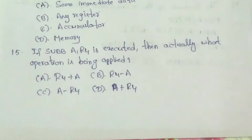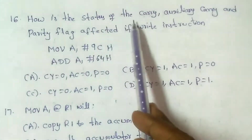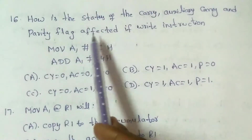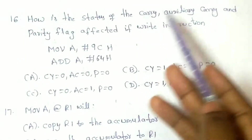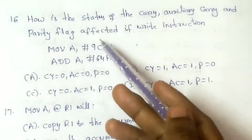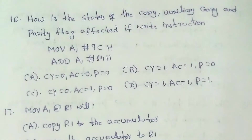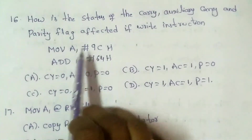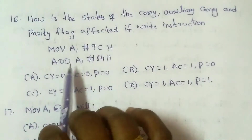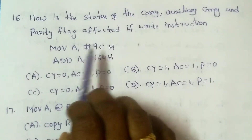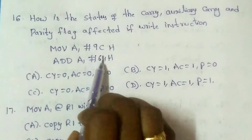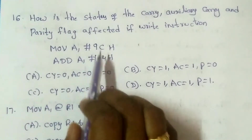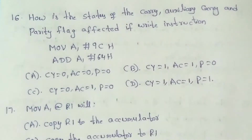Next question: How is the status of the carry, auxiliary carry, and parity flags affected by the following instructions: MOV A, #9CH; ADD A, #64H? We need to check the carry flag and parity flag after adding 9CH and 64H.